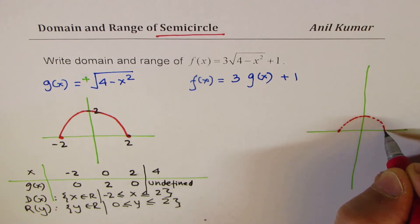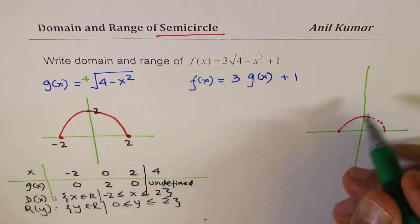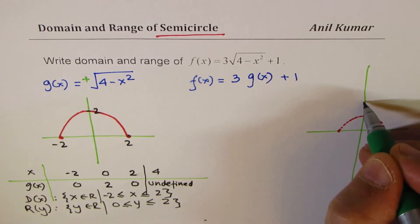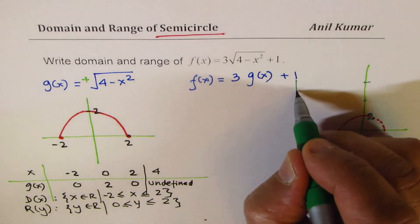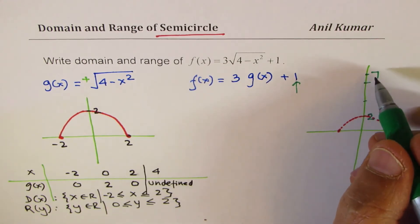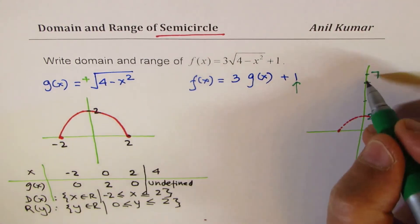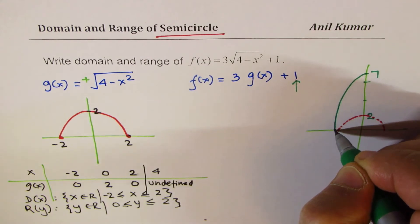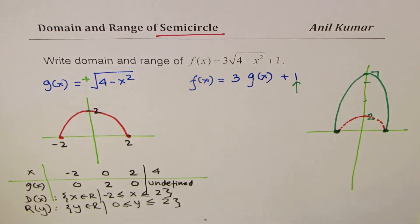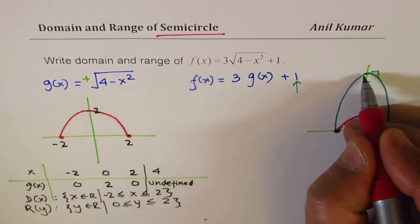In that case, what really happens is when you stretch it vertically by 3, so this point which was at 2 goes to 6, right? So this is 4, and this is 6, and then it moves further 1, so it goes to 7. However, it kind of gets stretched. Do you see that? It doesn't move horizontally. So the graph here is kind of like this.